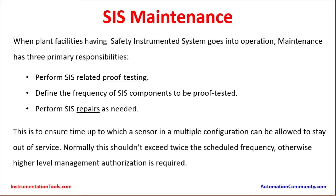When plant facilities having a Safety Instrumented System go into operation, maintenance has three primary responsibilities: perform SIS-related proof testing, define the frequency of SIS components to be proof tested, and perform SIS repairs as needed. This is to ensure the time up to which a sensor in a multiple configuration can be allowed to stay out of service.